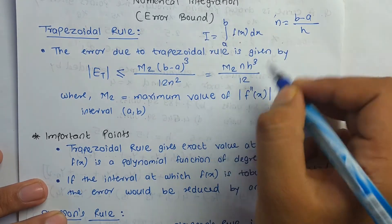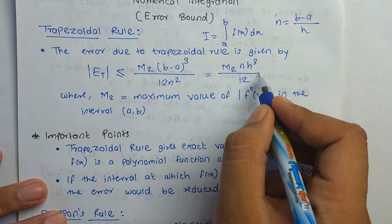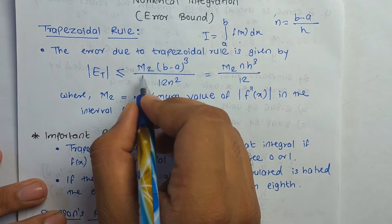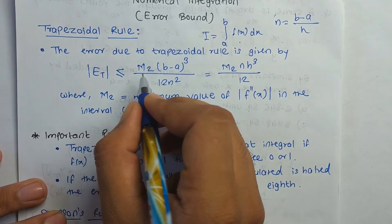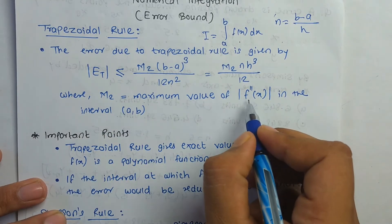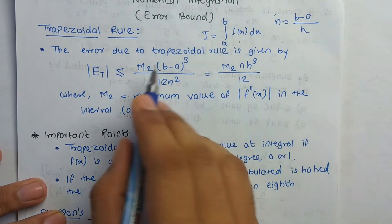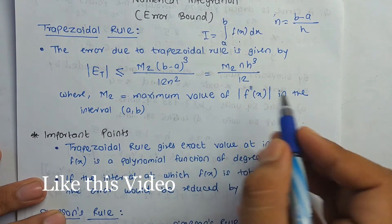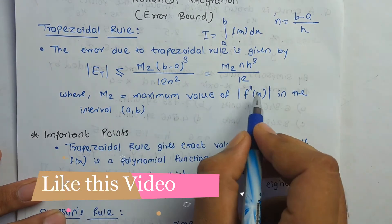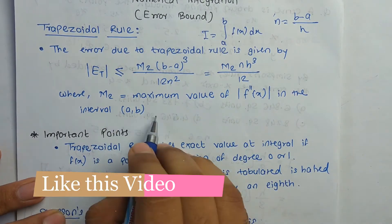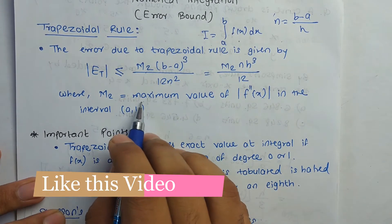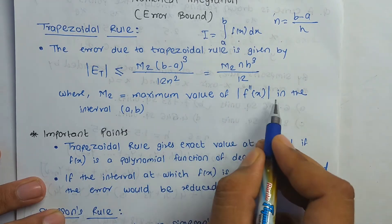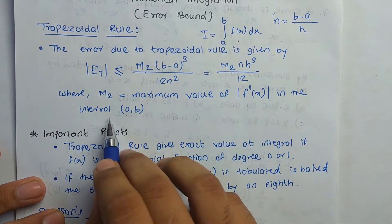Now, what is M2? M2 is the maximum value of f double dash of x — that is, the second derivative — in the interval [a, b]. So we have to find the maximum value of f''(x) in the interval [a, b]. This is the formula for the trapezoidal rule error.